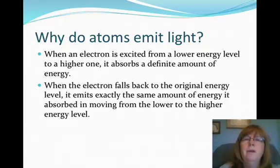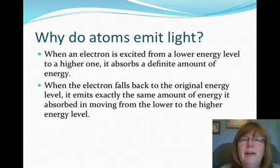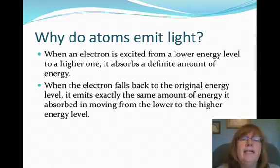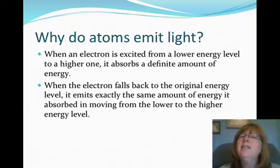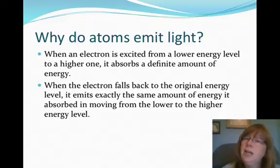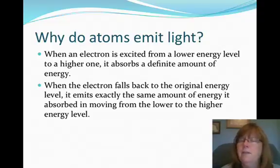First of all, let's review. Why do atoms emit light anyway? It's the electron in the atom that becomes excited from a lower energy state to a higher energy state. It's going to absorb a definite amount of energy, a discrete amount of energy. When the electron falls back down to the original energy level, it's going to emit exactly the same amount of energy that was absorbed in moving from that lower energy to the higher energy.